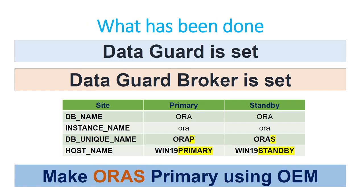The DataGuard environment is already set and the DataGuard broker is configured. The database name is Aura, with unique name AuraP on primary and AuraS on standby. The hostnames are Win19Primary and Win19Standby. AuraS is currently the standby. We are going to configure monitoring of both databases in OEM and then use OEM to perform a switchover — making AuraS the primary — without using SQL Plus or DGMGRL.